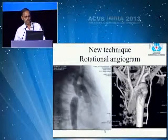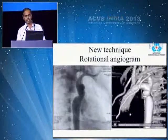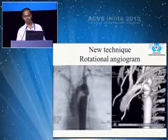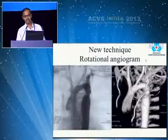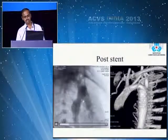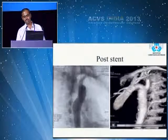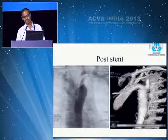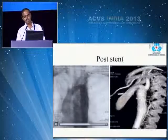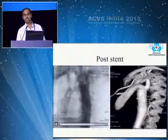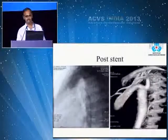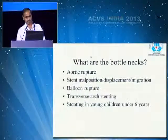Rapid RV pacing and marker pigtails are useful, and always keep a covered stent on the shelf. The newer technique is rotational angiography — the moment you do the angiogram, the machine gives a good reconstruction. This is a post-stent rotational angiogram showing intra-stent imaging. The advantage is precisely identifying in which projection the coarctation is best delineated so that you can deploy in that particular position.